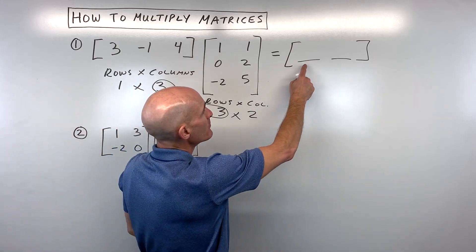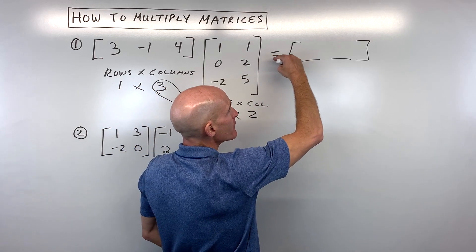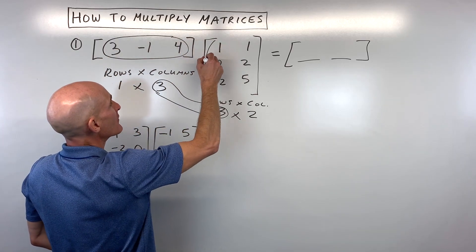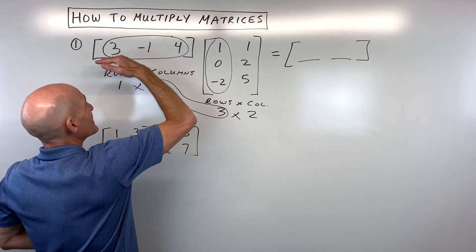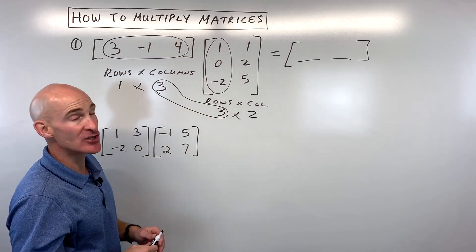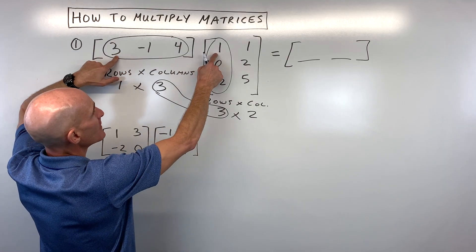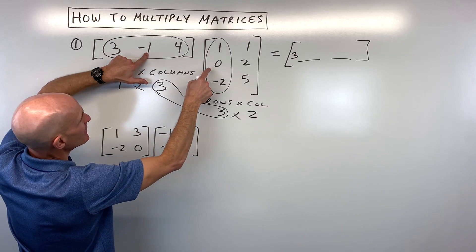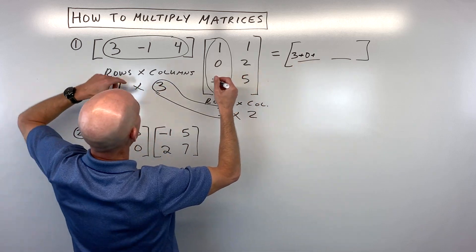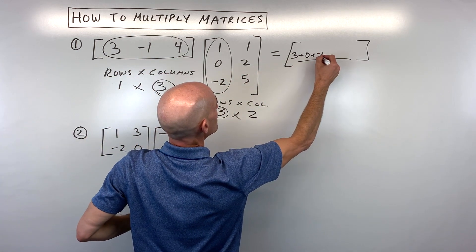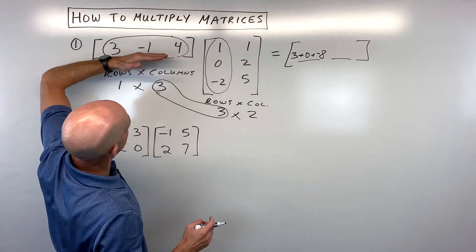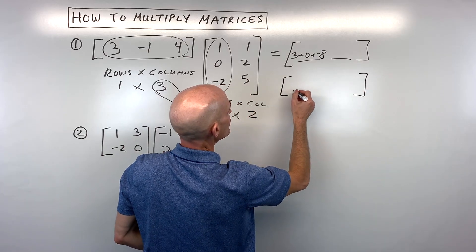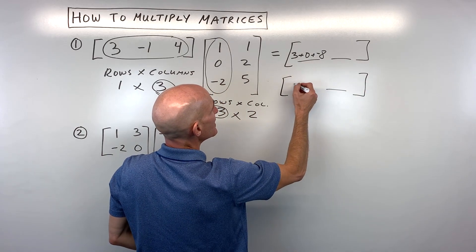What I like to do is work backwards a little bit. I like to say, what position is this element in? This element is in the first row, first column. So I'm going to take this first row and multiply it by this first column. I take the first element in the row times the first element in the column: three times one is three. Then the second element times the second element: negative one times zero is zero. Then the third times the third: four times negative two is negative eight. We multiply the matching ones and then add them together — three plus zero plus negative eight is negative five.